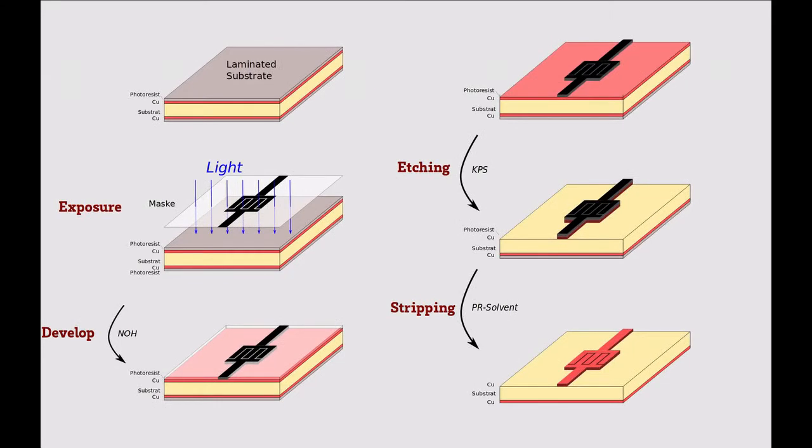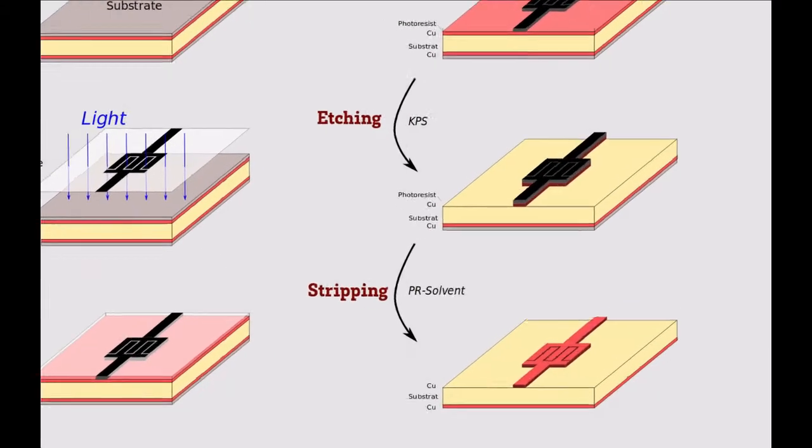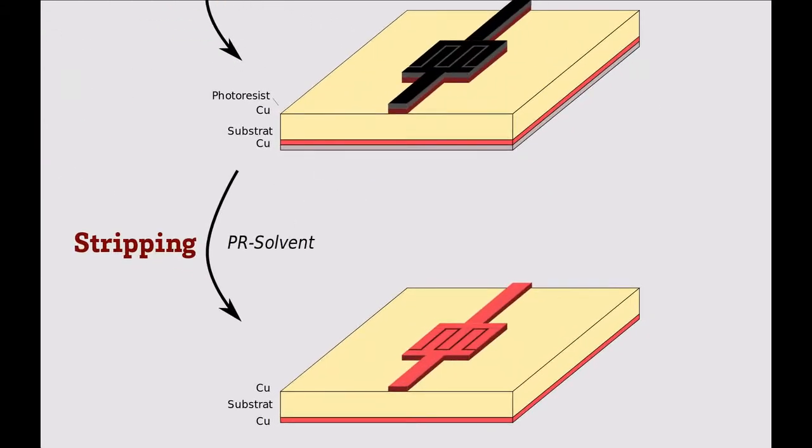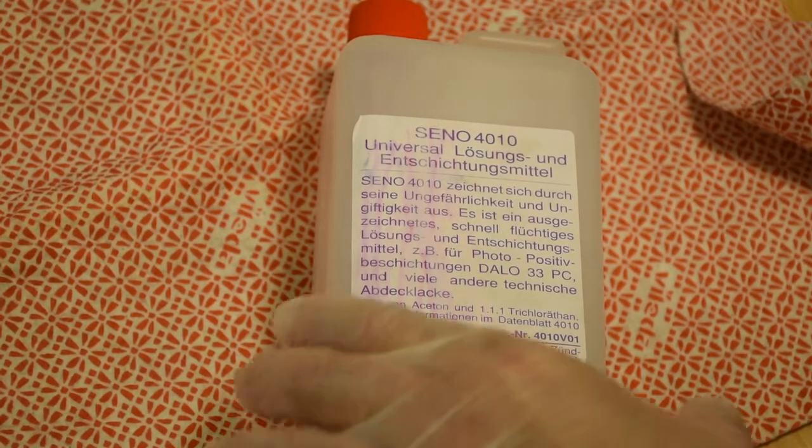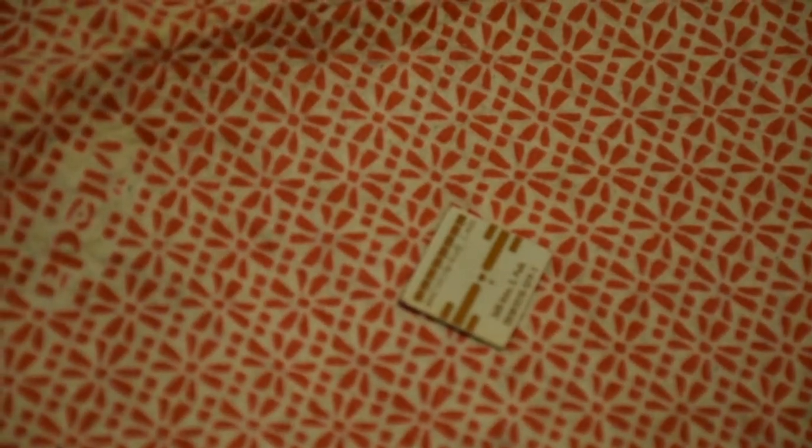The circuit is now still covered with a photoresist layer where the copper is on, and that's not good because we have to solder on that layer. That means we have to strip off the photoresist now. Stripping is done with a solvent called photoresist remover, and it's performed by taking the solvent and rubbing off the photoresist layer from the circuit board.